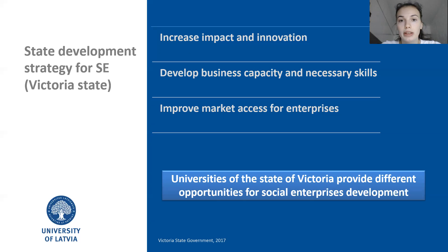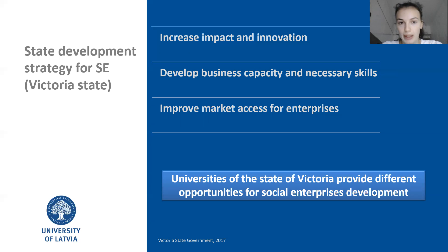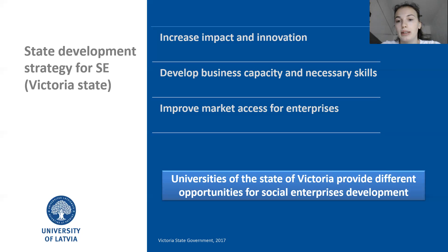Let us have a closer look at each of them. First, increase impact and innovation has three sub-points. First is that they want to promote field significance for customers, government and investors. Secondly, the social entrepreneurship ecosystem should be more coordinated and connected to a broader business environment. And finally, support for social entrepreneurship and an innovation culture should be developed.